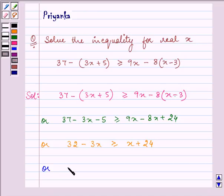Now on subtracting 24 from both the sides, we have 32 minus 3x minus 24 is greater than equal to x plus 24 minus 24.